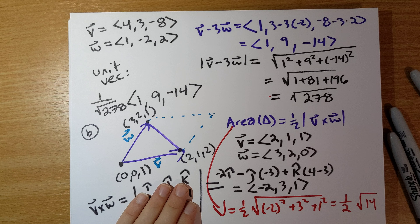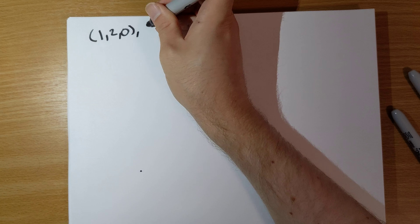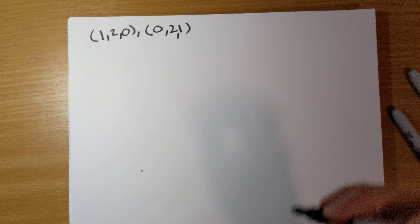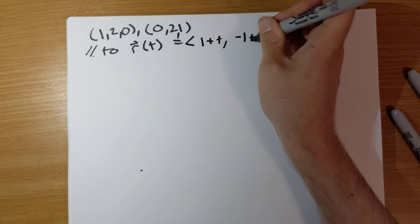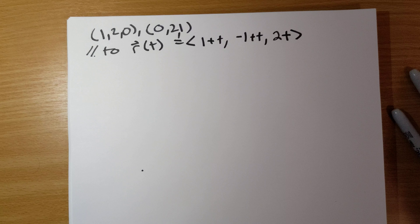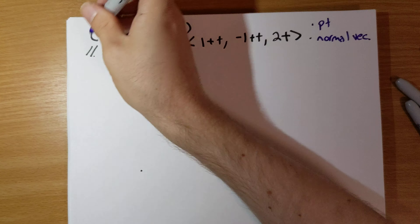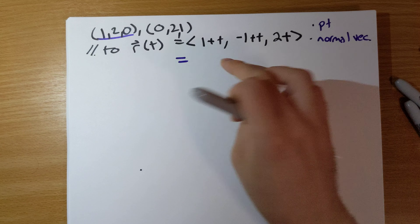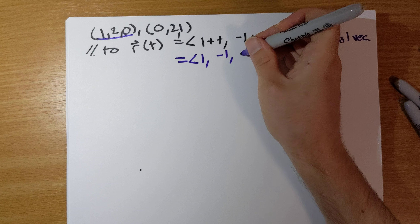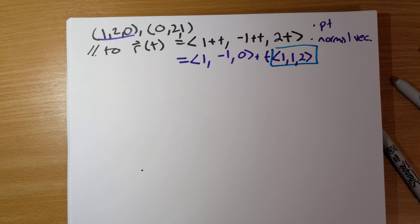That was problem 11. Problem 12: find an equation of the plane containing the points (1, 2, 0) and (0, 2, 1), and parallel to the line with equation (1+t, -1+t, 2t). To find the equation of a plane we need a point and a normal vector. We can rewrite the line as (1, -1, 0) plus t times (1, 1, 2), so the direction vector of the line is (1, 1, 2), which is parallel to our plane.